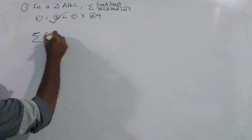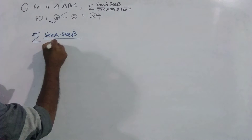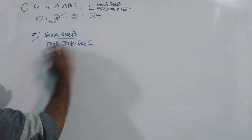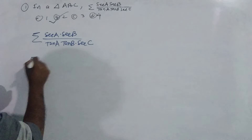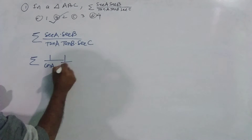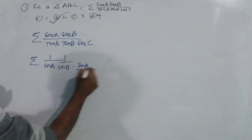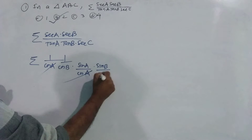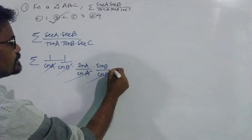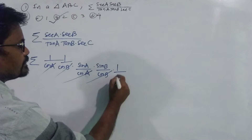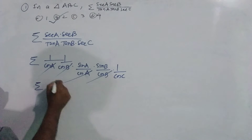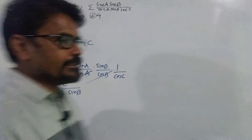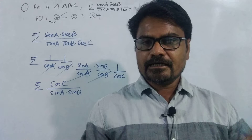We have the summation of cot A · cot B divided by tan A · tan B · cot C. Convert cot A as 1/tan A, which is cos A / sin A, and similarly cot B as cos B / sin B. Then tan A is sin A / cos A and tan B is sin B / cos B. After cancellations, cos A and cos B cancel out, leaving cos C in the numerator over sin A · sin B.